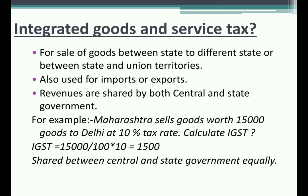In IGST, both the central and state governments are involved and share the revenue. For example, if Maharashtra sells goods worth ₹15,000 to Delhi at a 10% tax rate, the IGST will be: 15,000 divided by 100 multiplied by 10 = ₹1,500. If specifically asked how much the central government and the state government each take, we divide equally — ₹750 each.